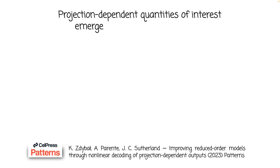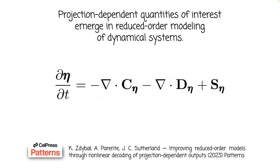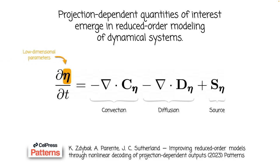Projection-dependent QoIs especially emerge in reduced-order modeling of dynamical systems. One such system describes transport of scalars in reacting flow — a classic partial differential equation in the form of convection-diffusion with source terms. Here, eta are the low-dimensional parameters computed by projecting the original system onto a low-dimensional subspace. And the source term s_eta is a projection of the full-dimensional source term onto the same subspace. Whenever we use a different projection operator to generate new low-dimensional parameters, the definition of s_eta changes as well, as it has to be reprojected onto that same subspace.